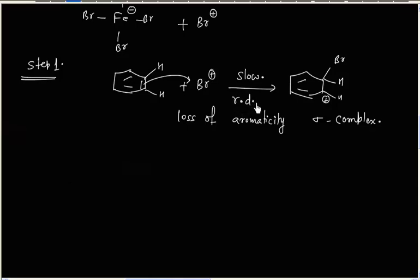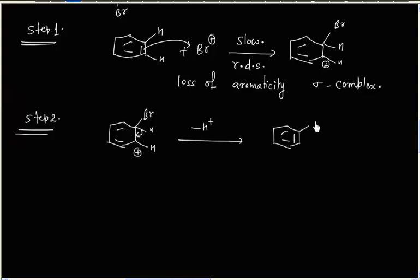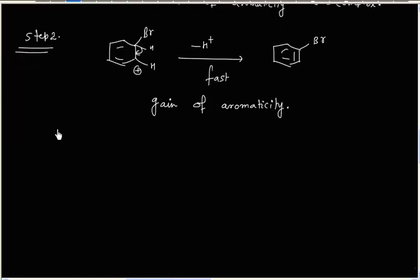This is also the rate-determining step. In the next step, H⁺ is lost to regain aromaticity, giving bromobenzene. This step is faster because aromaticity is being regained. The reaction involves one intermediate, which is the sigma complex.